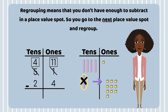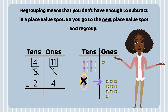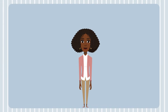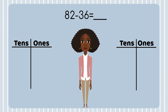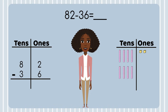Now that you know what regrouping is, let's get started on subtracting two-digit numbers with regrouping. It might seem a little confusing, but I'm here to make it easy for you. Here's my equation: 82 minus 36. I'll draw two place value charts — one for my numbers from the equation, and the other for my model. I'll be using place value blocks to model my number to help me subtract. When I subtract, I always model my total, which is 82. I need to subtract 36, so I won't model that number — I'll subtract it from my total.